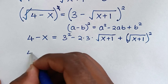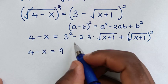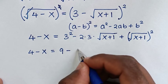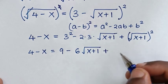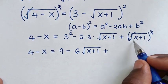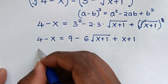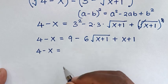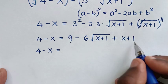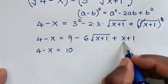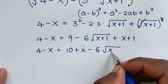So it becomes: 4 minus x is equal to 3 squared, which is 9, minus 2 times 3 times square root of (x plus 1), plus the square of square root of (x plus 1), which simplifies to x plus 1. Combining constants: 9 plus 1 is 10, giving 10 plus x minus 6 times square root of (x plus 1).